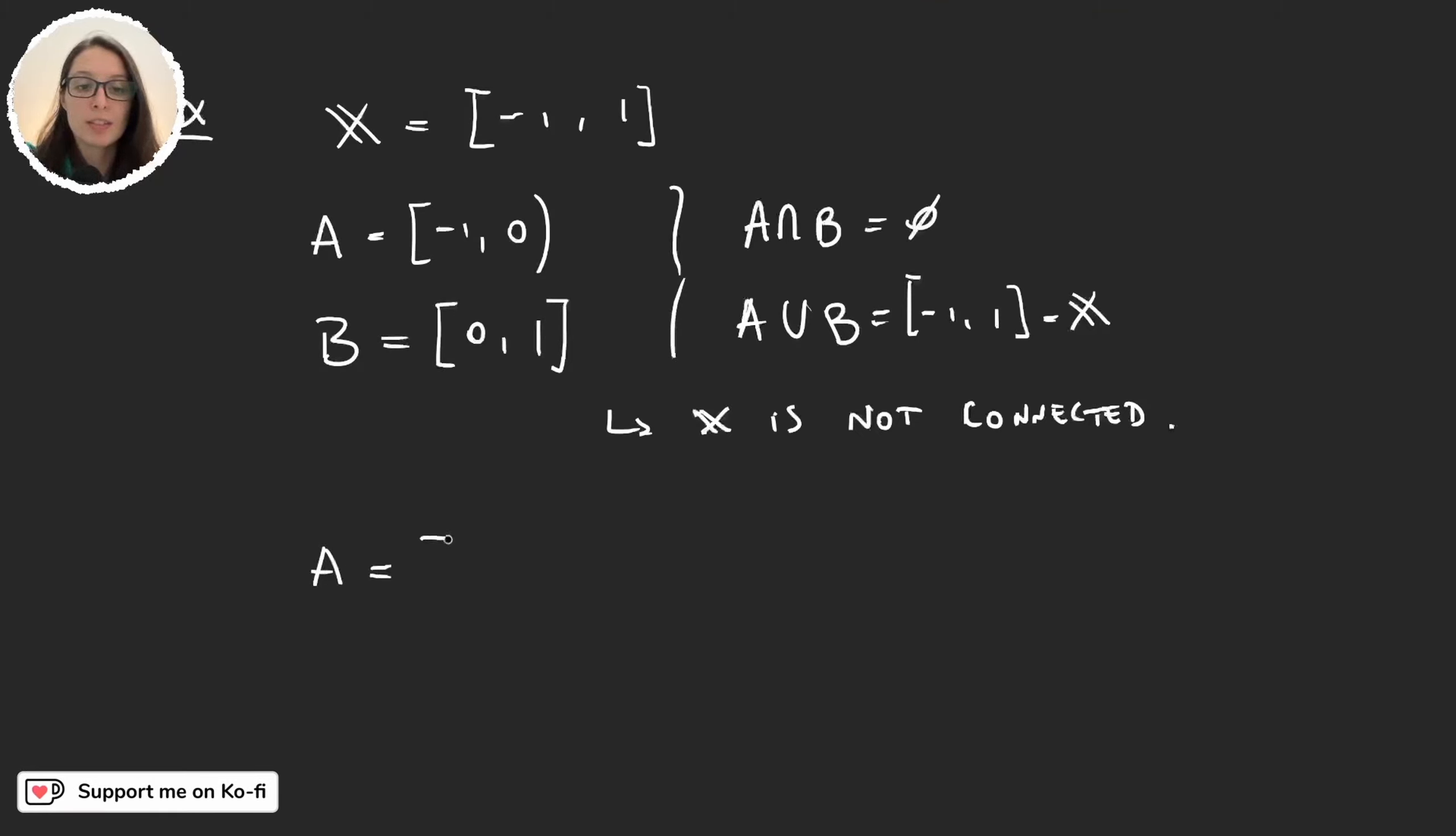Well obviously here I am considering X with the subspace topology. So let's check if our sets are open. Well A is [-1,1] intersection (-2,0). Given that this is our set X and this set is open in the real line with the standard topology then we have that A is open.